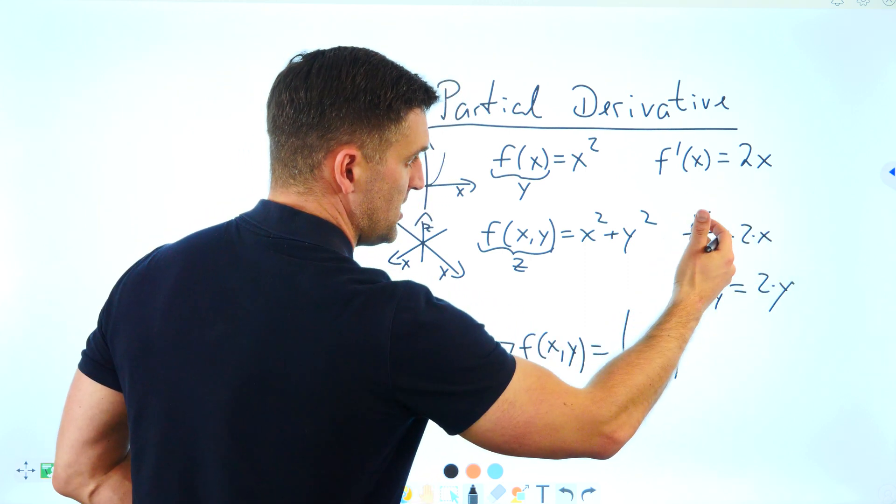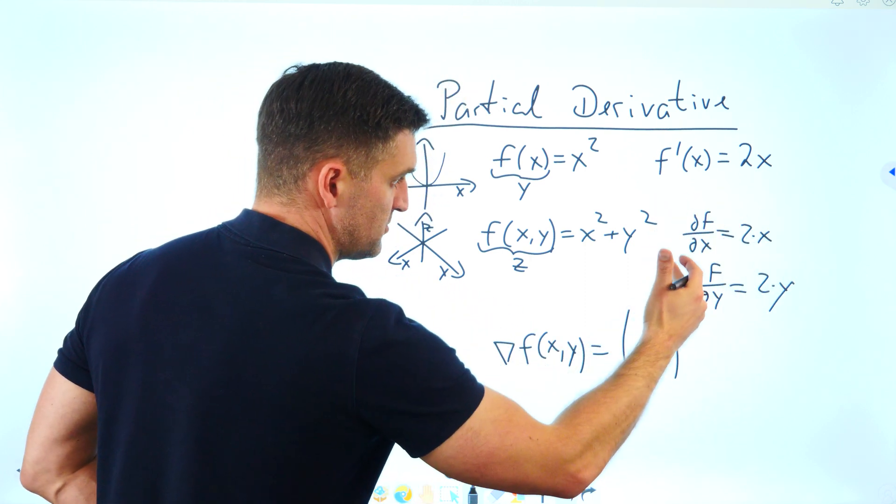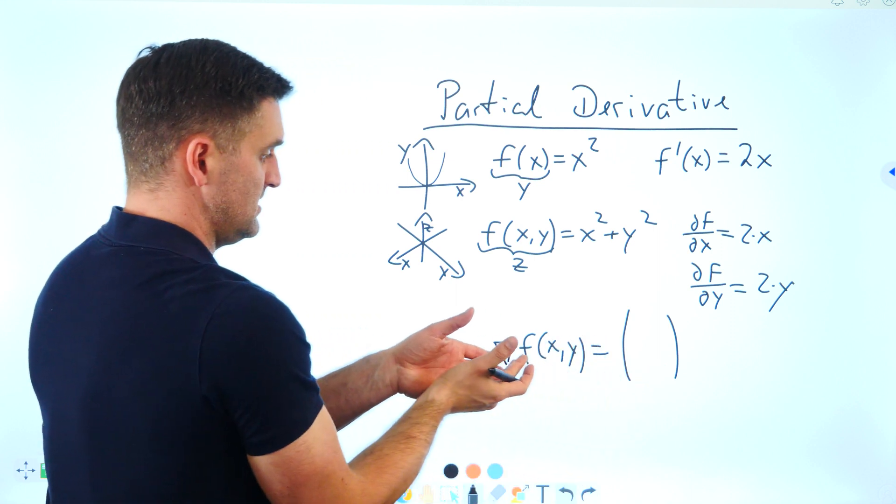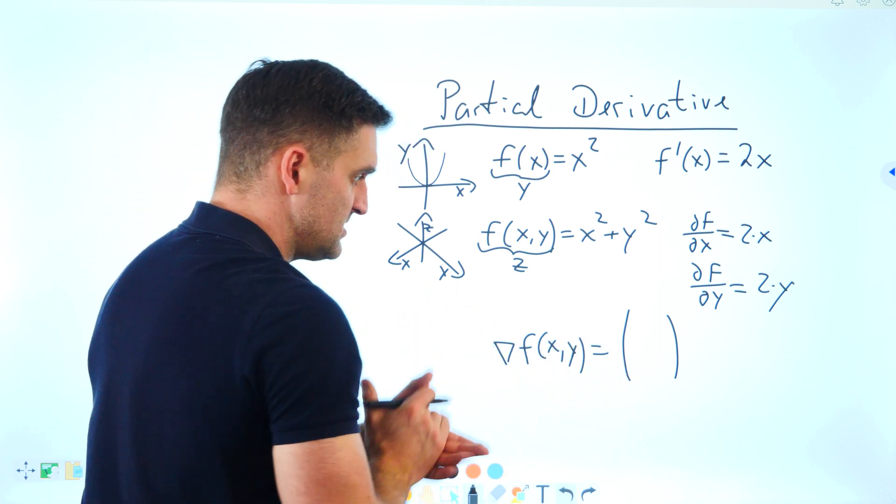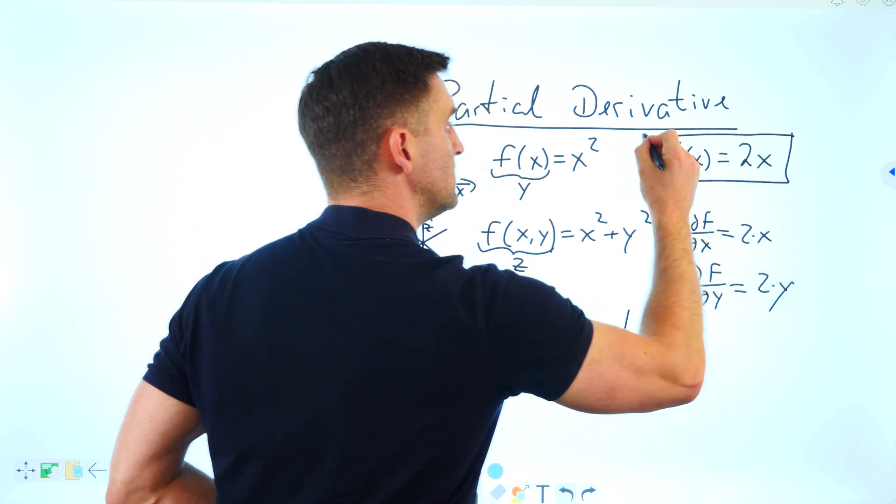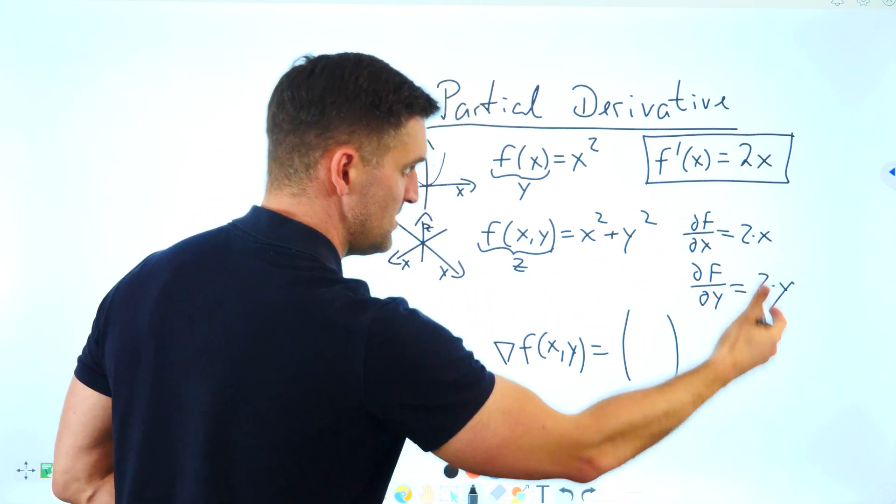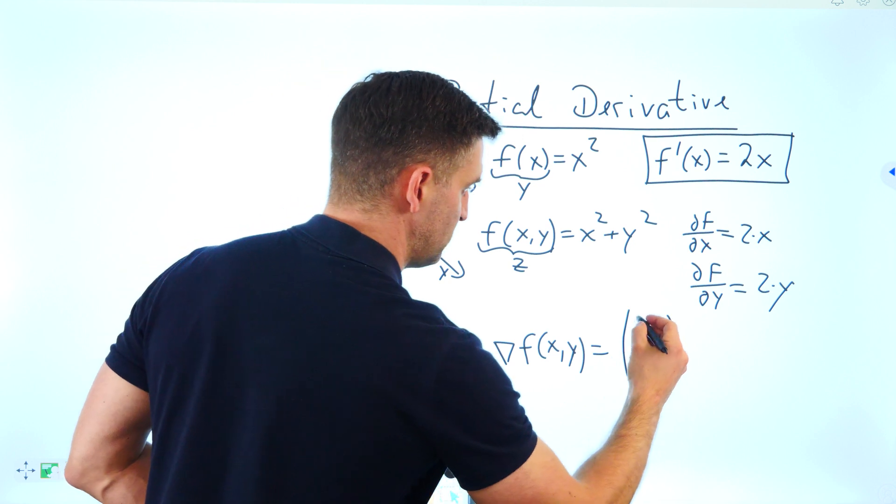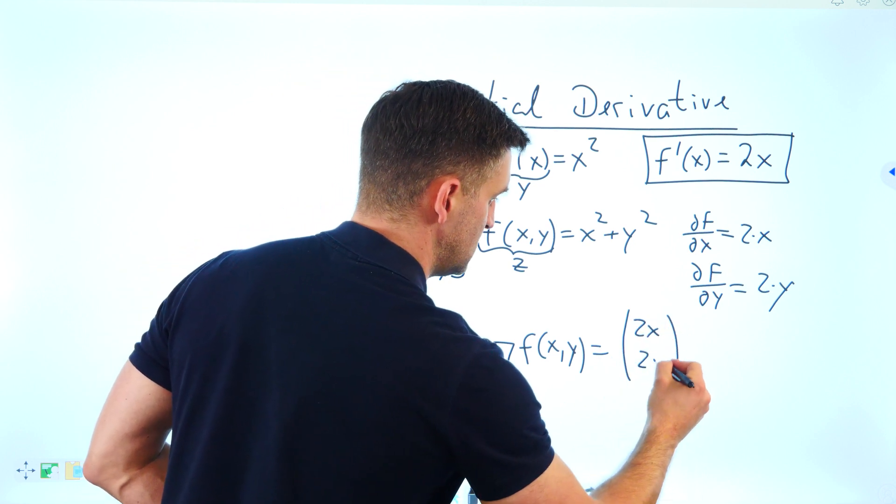So you have partial derivative number 1, partial derivative number 2. And the gradient is the notation of not one derivative but all the partial derivatives we have. In this case, 2x, 2y.